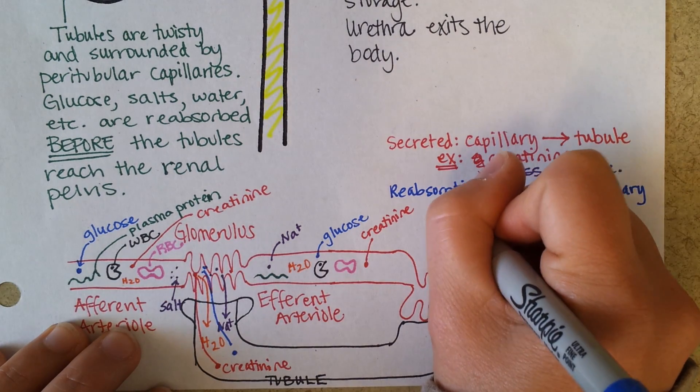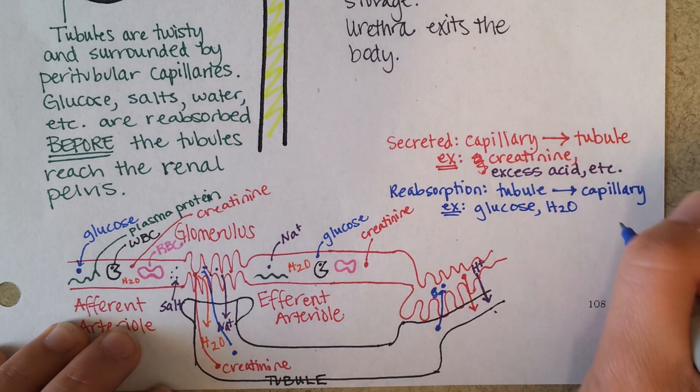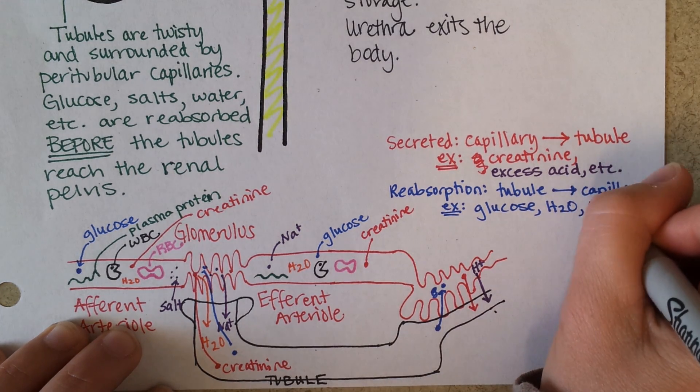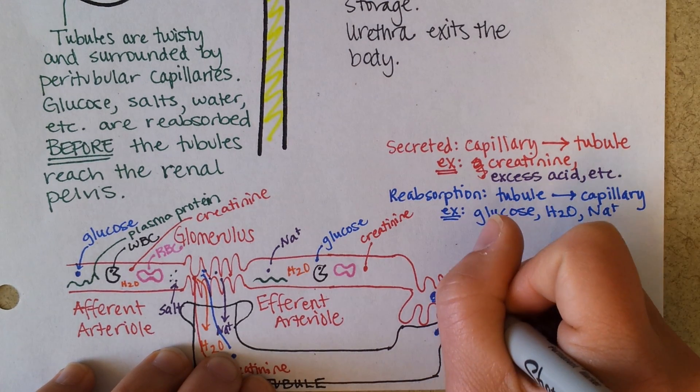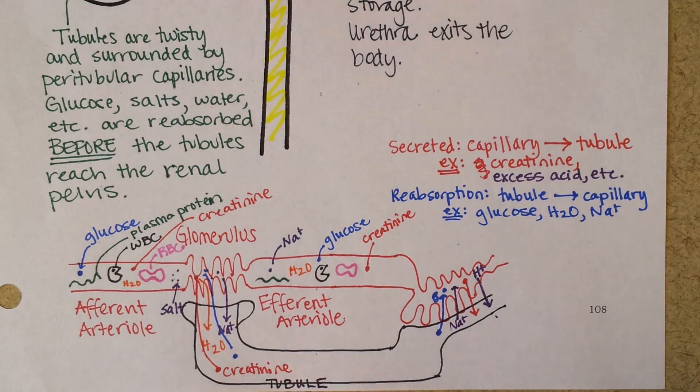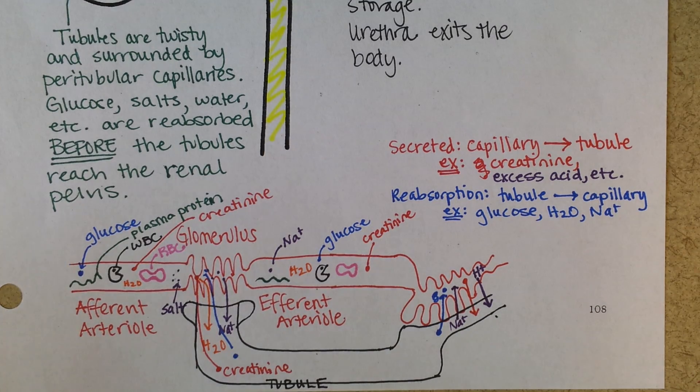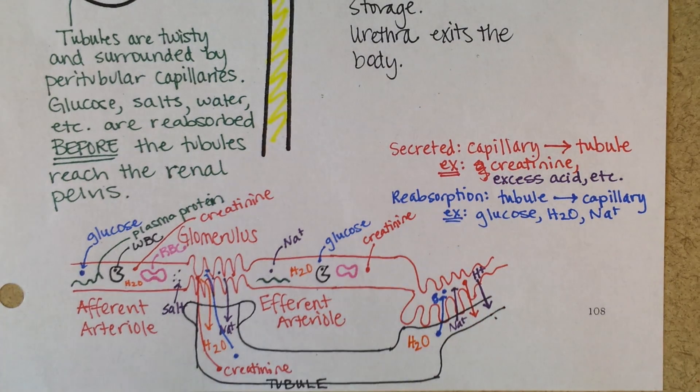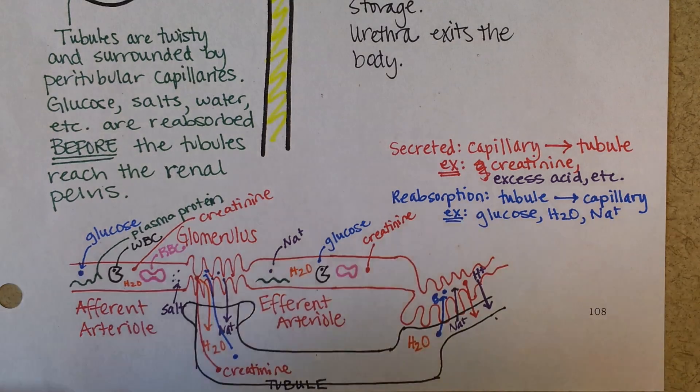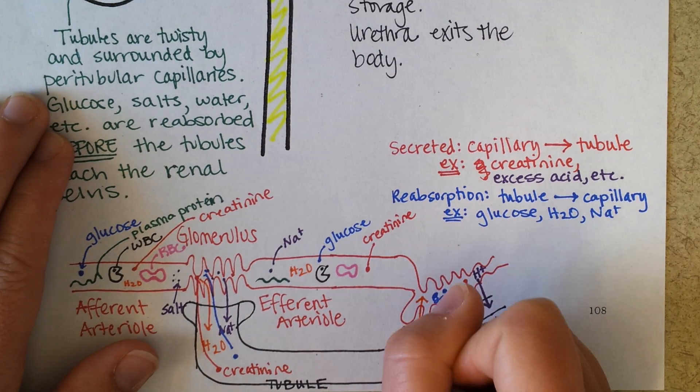That's going to be the tubule to the capillary. And some examples would be glucose, water, not all of it, but a lot of it, a lot of salt. So you could put on our picture, what color did I make salt? Purple. So salt could be reabsorbed as needed. If you had pizza, you don't need to reabsorb a lot. Then more of it would just stay in the tubule and end up in the urine. And then water, we did that in orange, right? A lot of water gets reabsorbed.